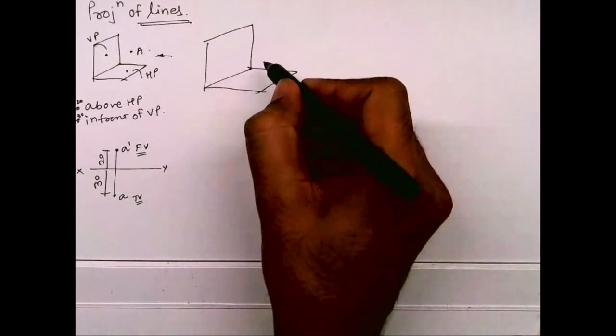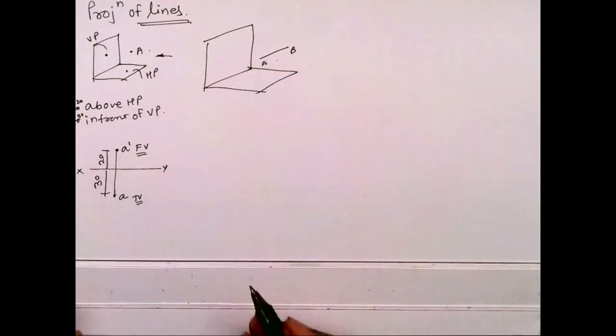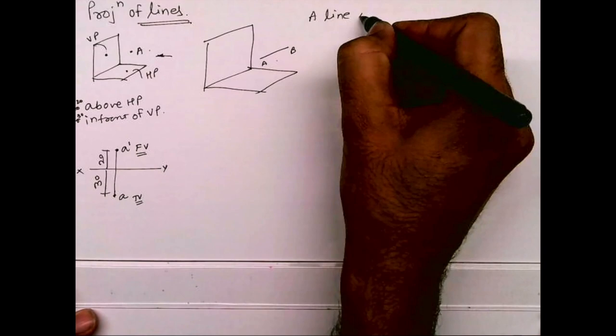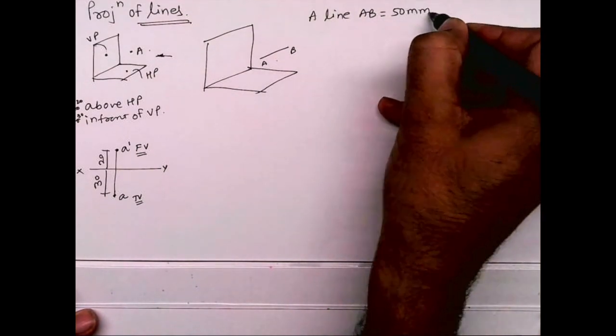So we have horizontal plane and vertical plane and this is a line AB. So can I see a line AB is parallel to HP and VP, a line AB which is 50 mm long.